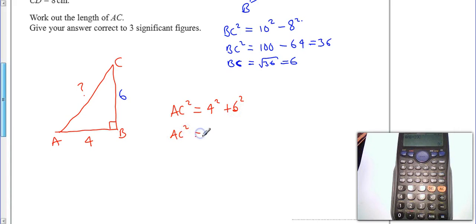So AC squared is equal to 16 plus 36, or AC squared is equal to 52. So to work out the value of AC I'm going to find the square root of 52 which is 7.211102551.